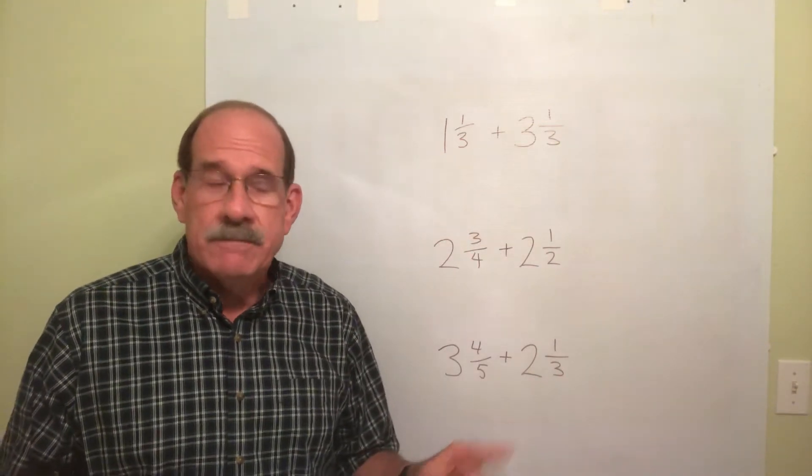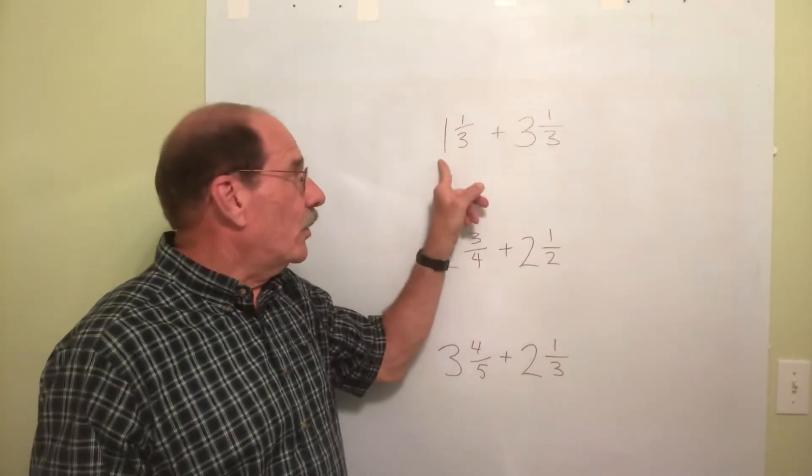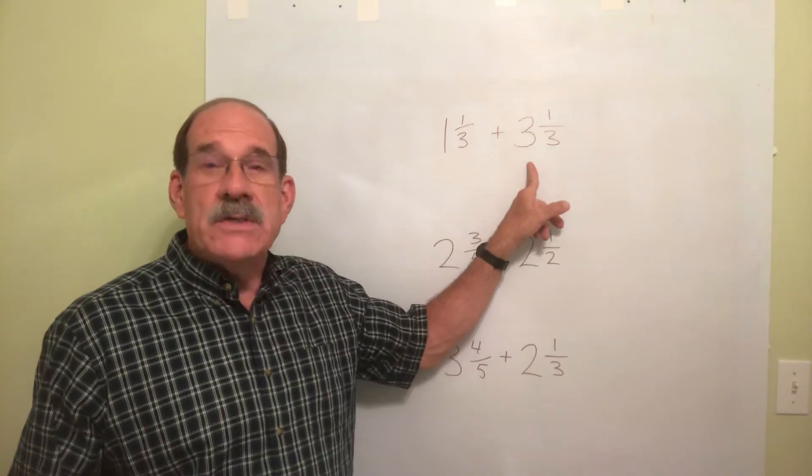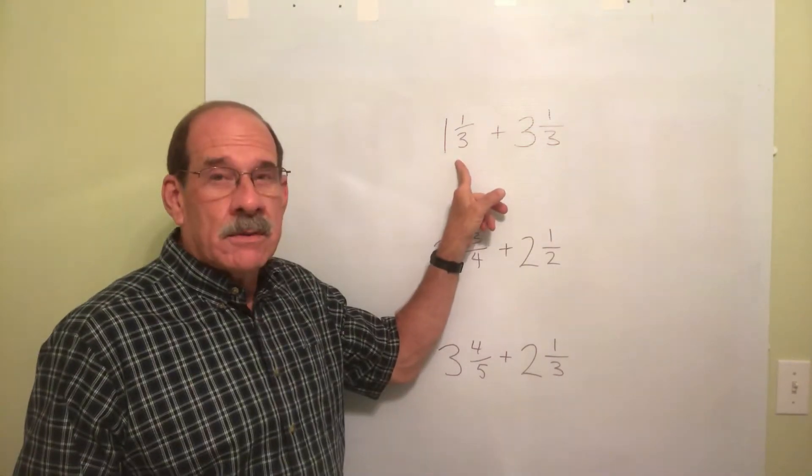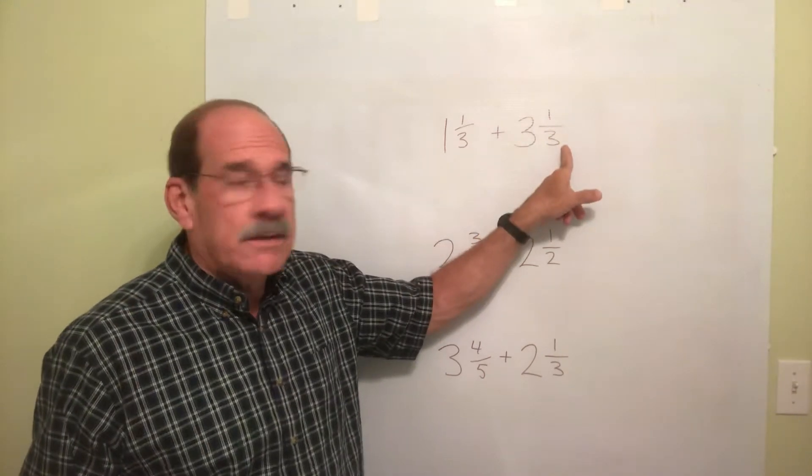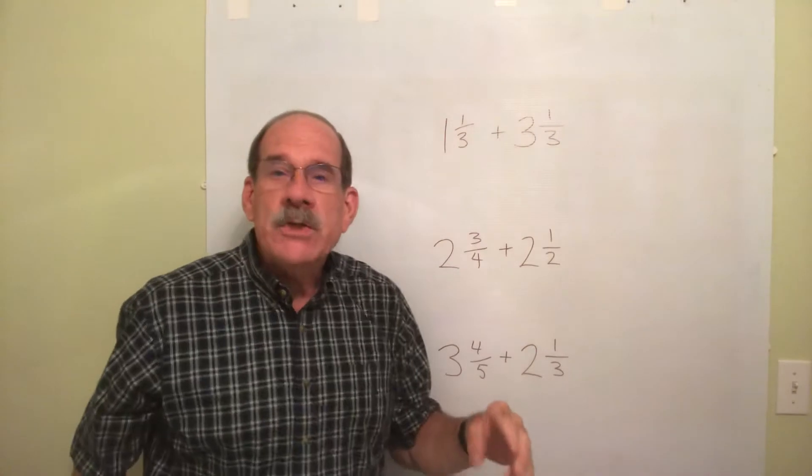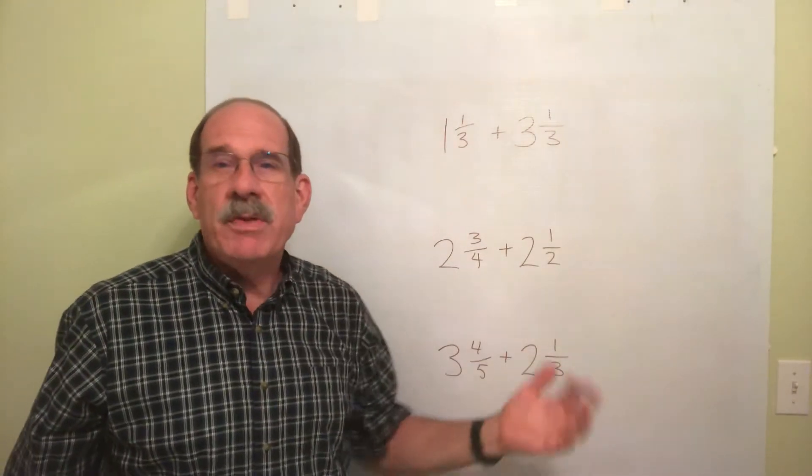Here's what I recommend. First, ignore the whole numbers. Let's just ignore the 1, ignore the 3. Let's just first deal with the fractions. Let's just consider this as 1 third plus 1 third. Ignore the 1 and the 3 entirely. Once we've done the fraction portion, then we'll pick up the whole numbers.